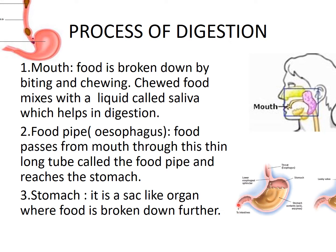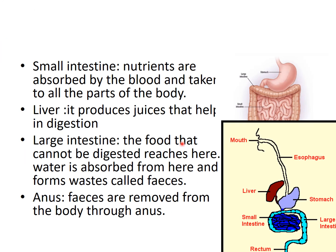After the stomach, the food passes into the small intestine. Here, the food is broken down into simpler forms and the nutrients are absorbed by the blood and taken to different parts of the body. Whatever nutrient remains in the food is taken up by the blood vessels from the small intestine.